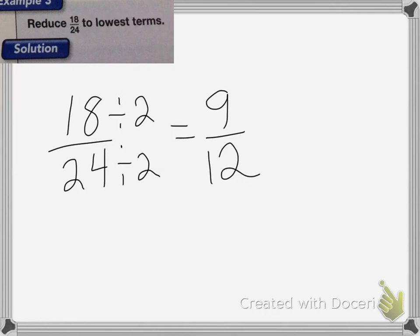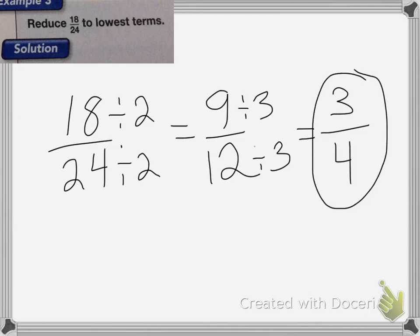Now I know that 9 and 12 can both be divided by 3. So I'm going to divide both these numbers by 3. 9 divided by 3 is 3, and 12 divided by 3 is 4. Now there's no other whole number that goes into both 3 and 4, so that will be my answer, 3 fourths. That's as far as I can reduce it.